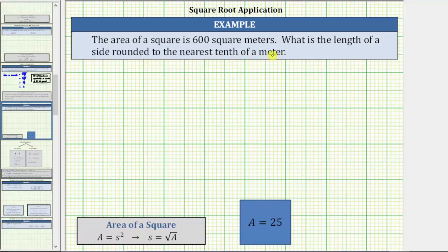We know the area formula for a square is A equals S squared, where A is the area and S is the side length.